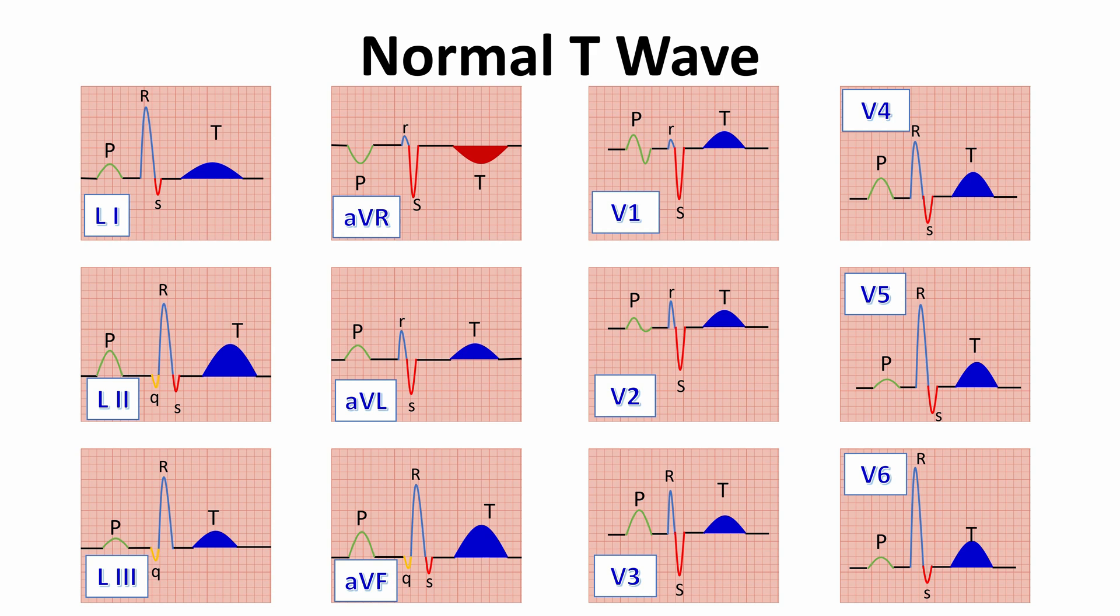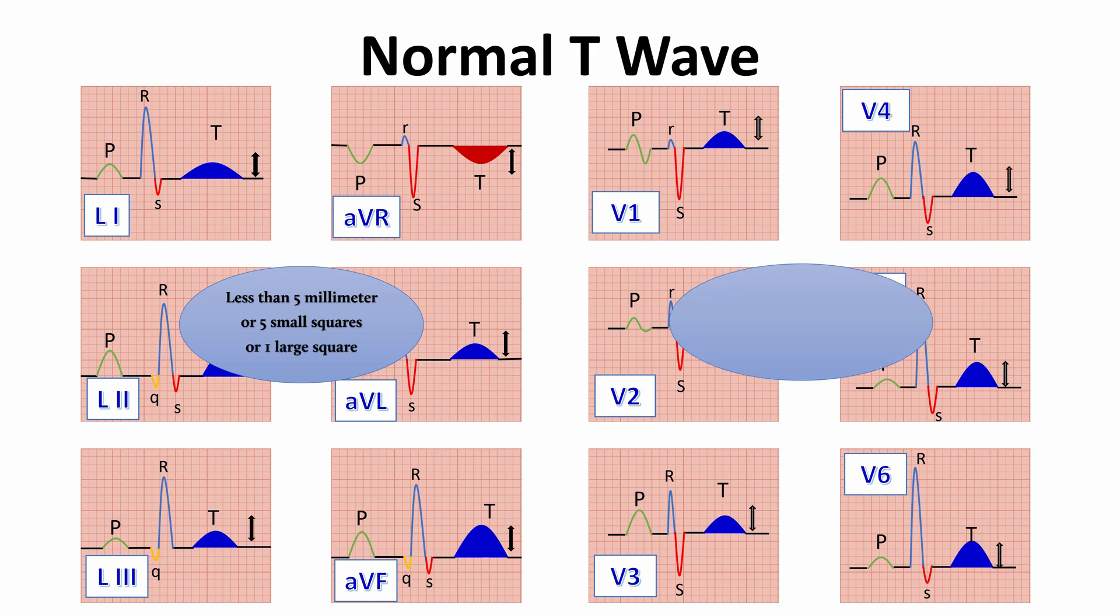Also, it is often inverted in lead V1, occasionally in lead V2, V3, and sometimes in lead 3. The normal T-wave is taller in lead V6 than in lead V1. The amplitude of the normal T-wave does not generally exceed 5 mm in the limb leads and 10 mm in the precordial leads.